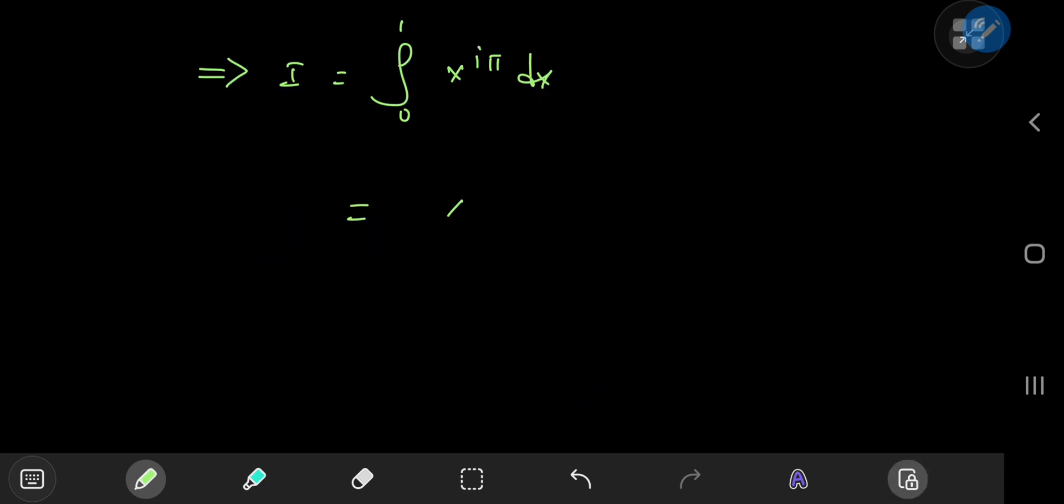So this sorts out to x to the i pi plus 1 divided by i pi plus 1 with the limits being 0 and 1. So in the limit as x approaches 1 you just get a 1 and as x approaches 0 you get a 0. So you have the reciprocal of 1 plus i times pi.